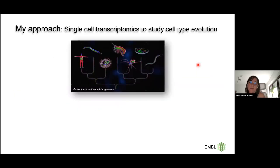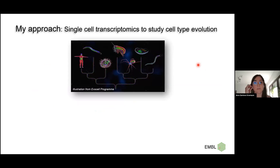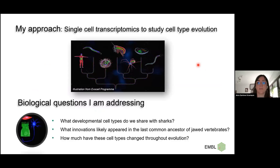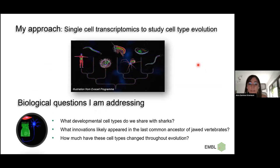So how am I studying the sharks? My initial approach is based on single-cell transcriptomics. Basically, I sequence the single cells of the telencephalon of the shark, characterize them, and then compare with other vertebrates to infer evolutionary changes. Some of the biological questions I want to address are: what developmental cell types do we share with sharks? What innovations likely appeared in the common ancestor of jawed vertebrates? And how much have these cell types changed throughout evolution from sharks to mammals?